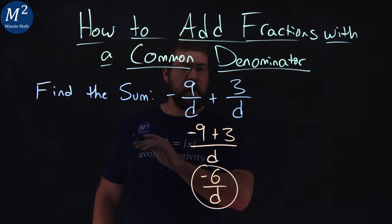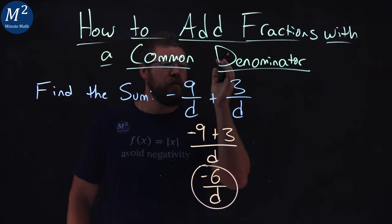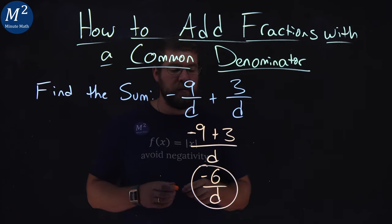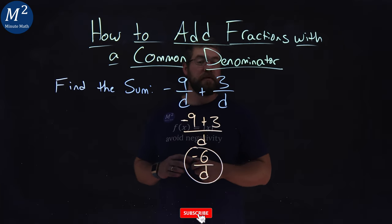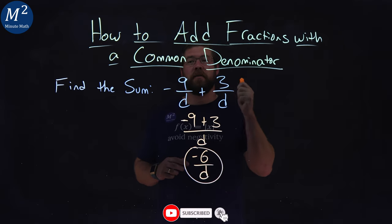And there we have it. Negative 9 over d plus 3 over d simplifies to be negative 6 over d. Hope you learned something here on how to add fractions with a common denominator.